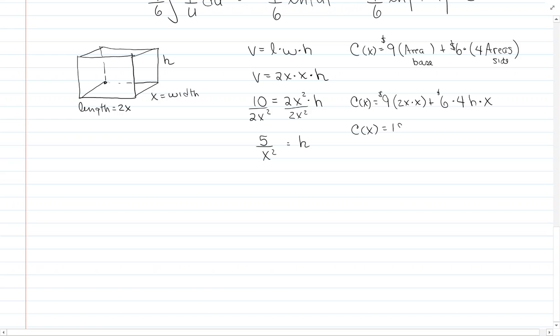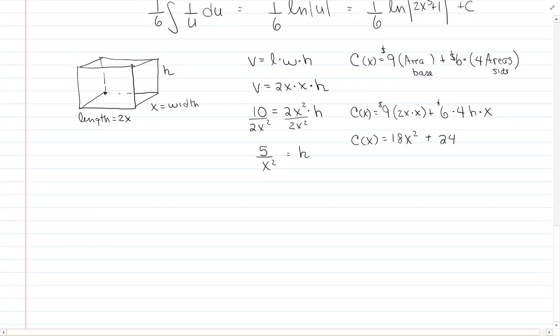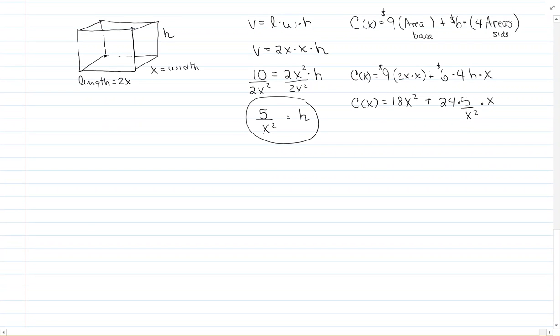Let's clean this up. C(x) equals 18x squared plus 24hx. We don't want h because we want everything in terms of x, so I go back to that first equation and substitute h equals 5 over x squared. So the cost is 18x squared plus 24 times 5 over x squared times x, which is 18x squared plus 120 over x.